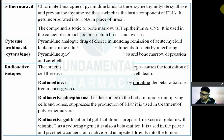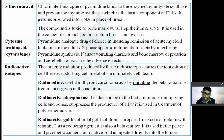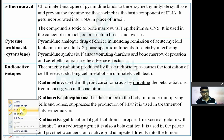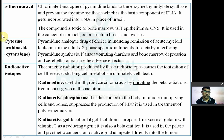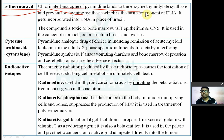Next is 5-fluorouracil. This is a fluorinated analogue of pyrimidine. It binds to the enzyme thymidylate synthetase and prevents the synthesis of thymine.